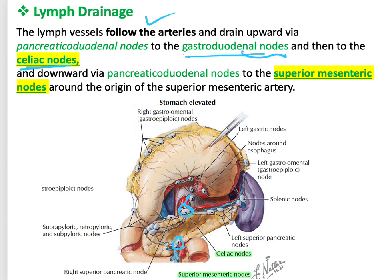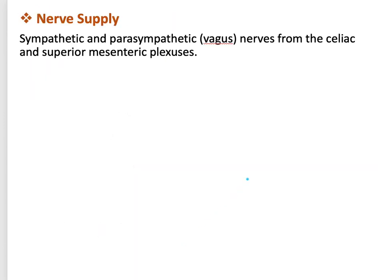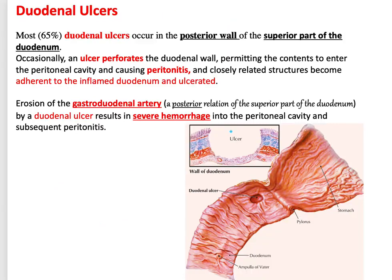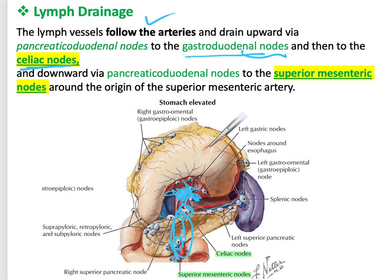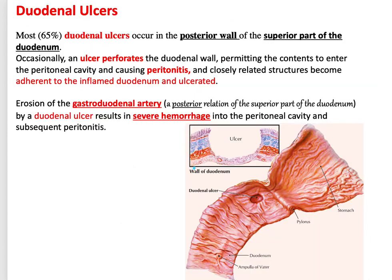Lymphatics drain to the celiac lymph nodes, close to the celiac trunk, and to the superior mesenteric lymph nodes, close to the superior mesenteric artery. Nerve supply comes from the vagus nerve, with a plexus around the superior mesenteric artery containing both sympathetic and parasympathetic fibers.